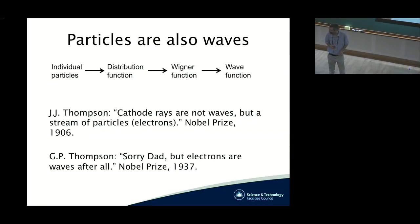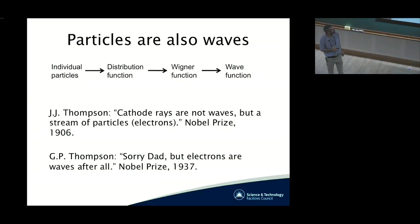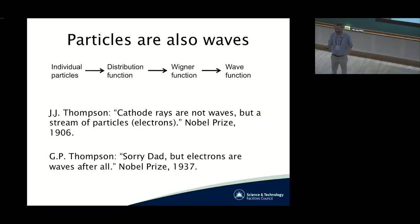That led to some confusion initially. For example, J.J. Thompson studied cathode rays and concluded they are not waves — they are a stream of particles, which he called electrons. He received the Nobel Prize for it. And then his son, G.P. Thompson, showed that those electrons are waves after all, and he got the Nobel Prize for that 30 years later.